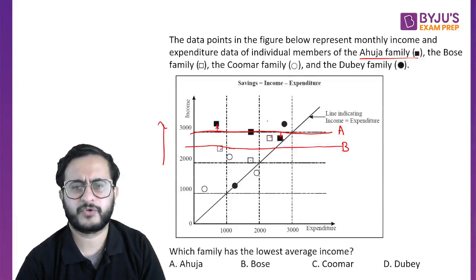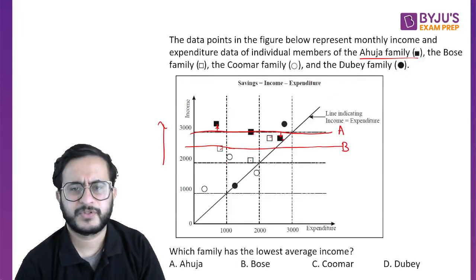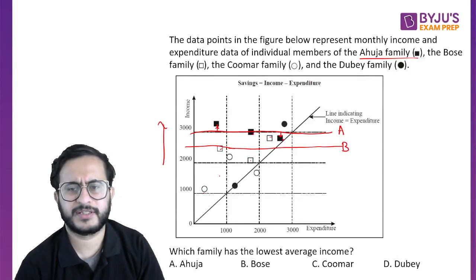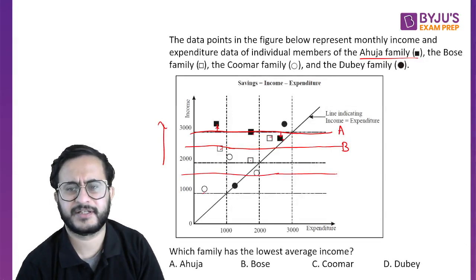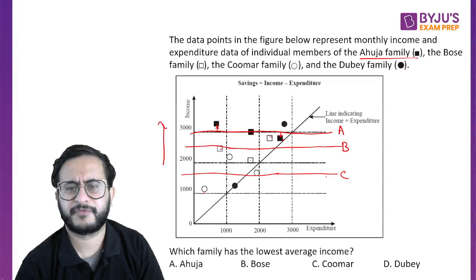Third is the Kumar family. These points are somewhere around here — whether it is 1700 or 1600, you should not be worried about. This average is of the Kumar family.